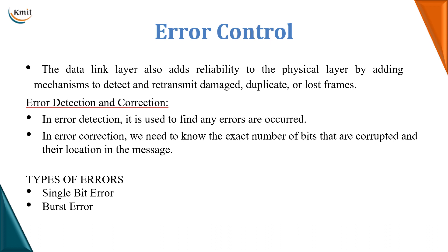Error control is one of the responsibilities of the data link layer, where the data link layer adds reliability to the physical layer by adding some mechanisms to detect and retransmit lost, damaged, or duplicate frames. This mechanism is called error detection and correction.